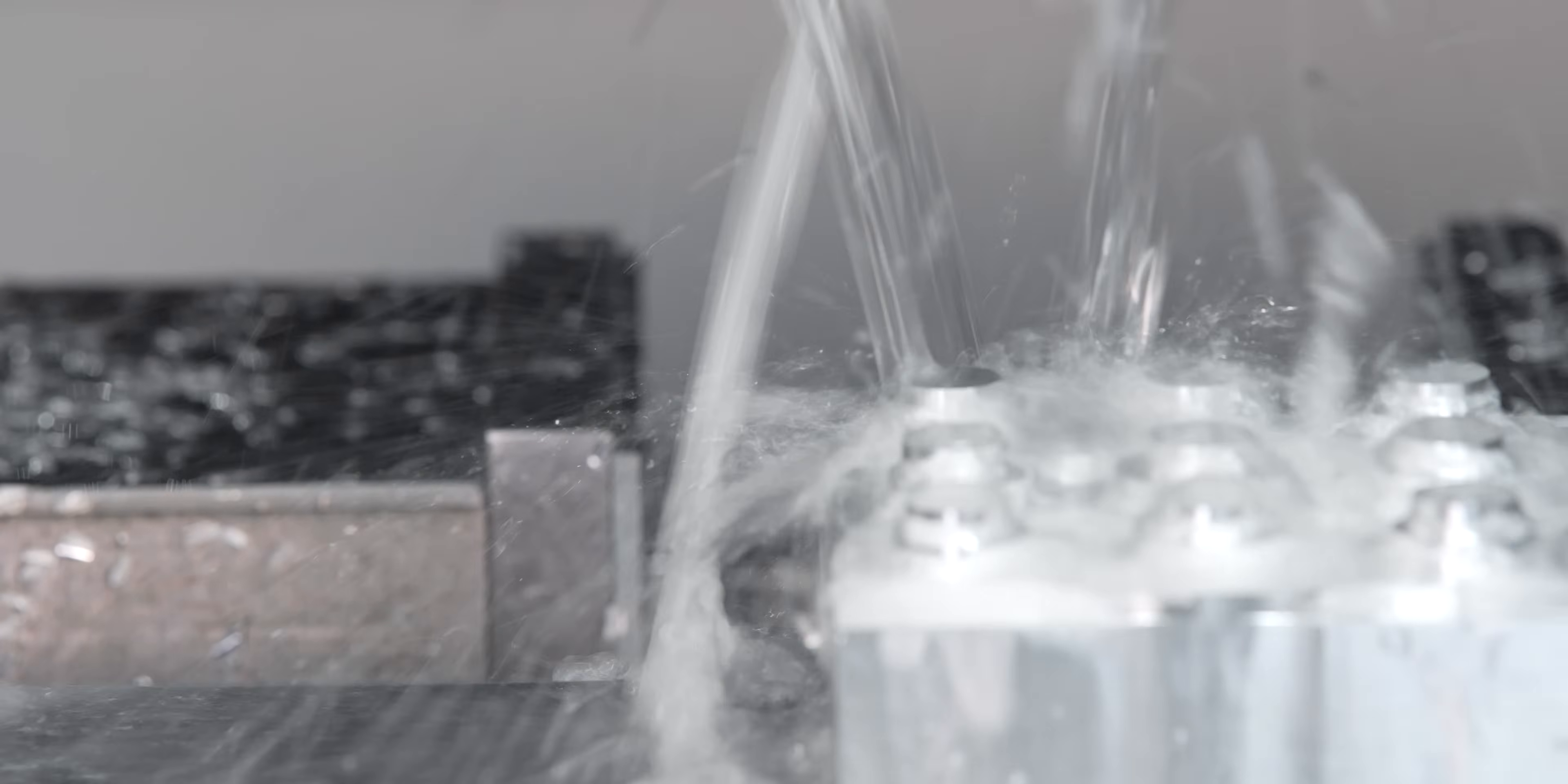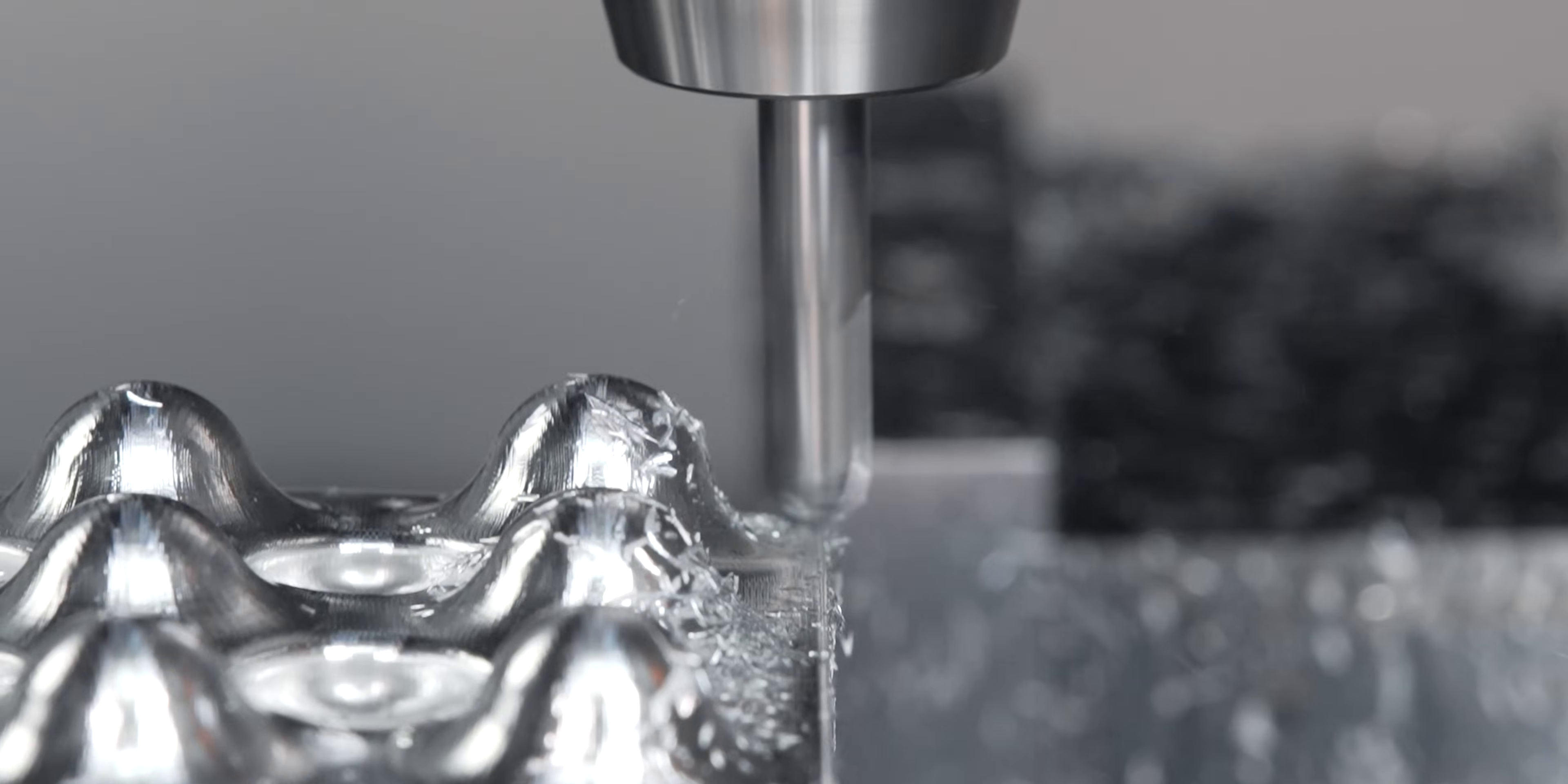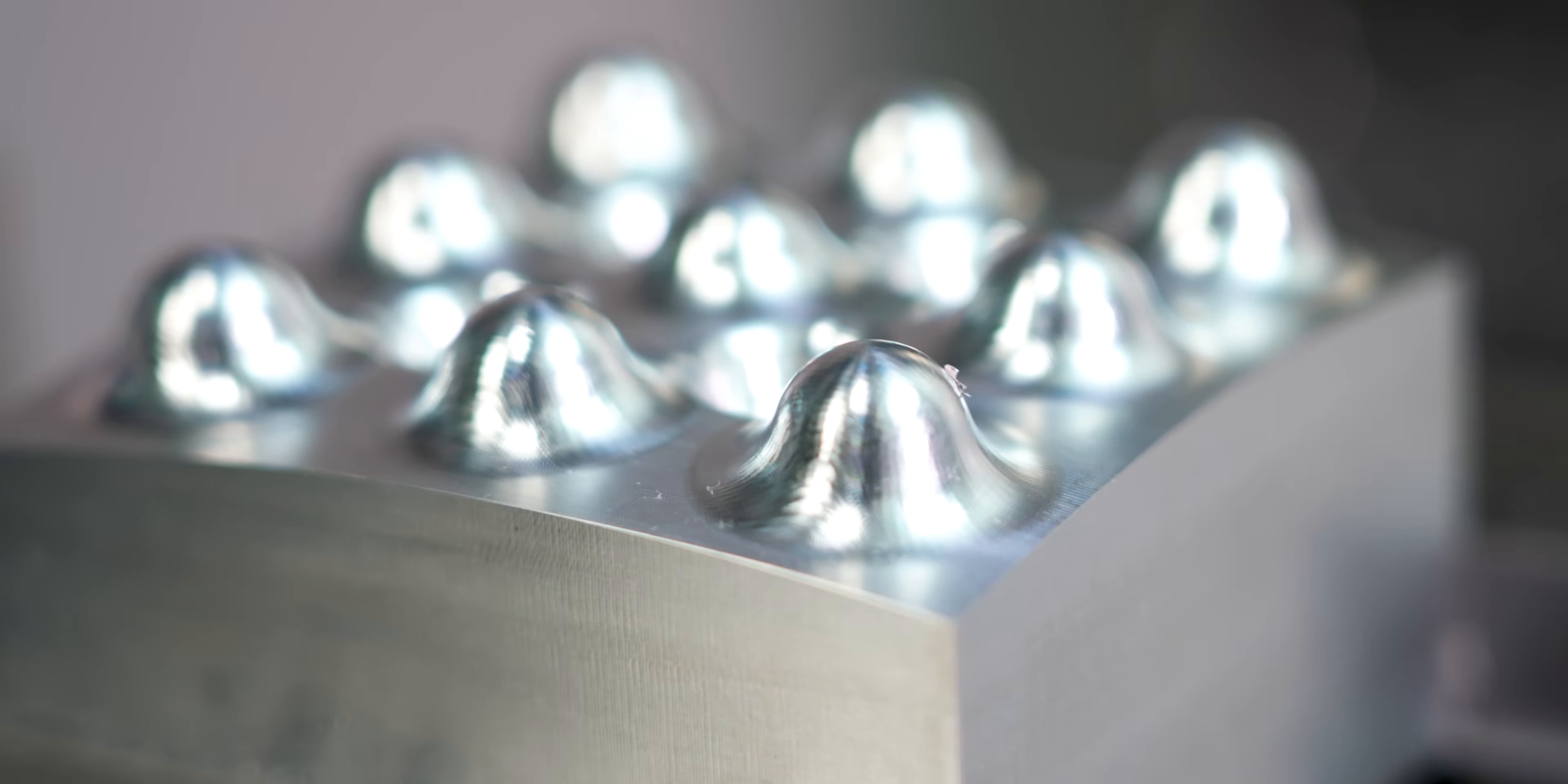We're coming in with a standard carbide ball end mill for a semi-finish pass. Now that the semi-finish pass is done, this gives you an idea of what the surface finish would look like with a standard carbide tool.